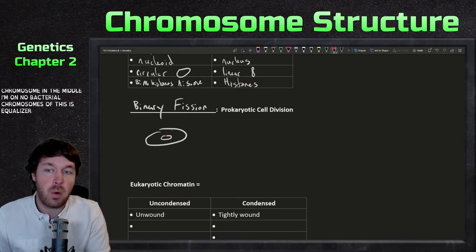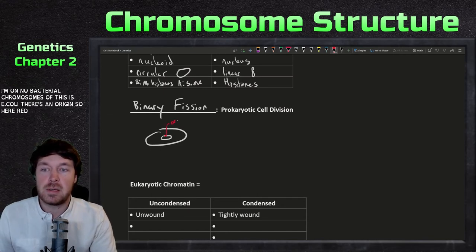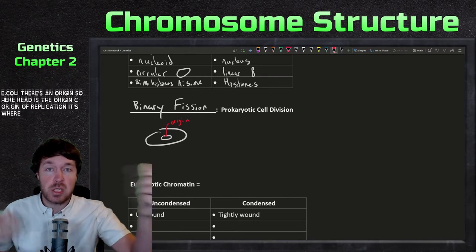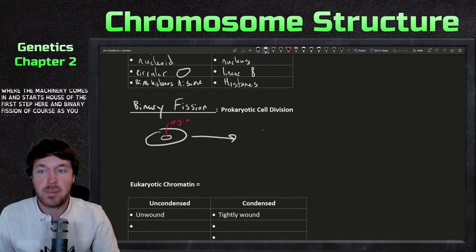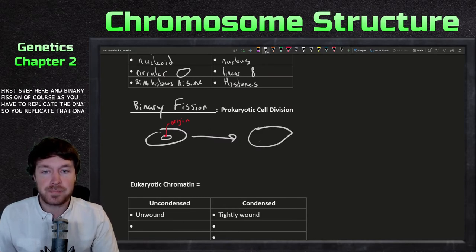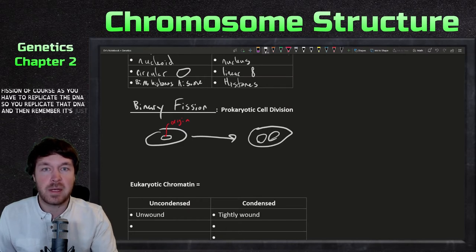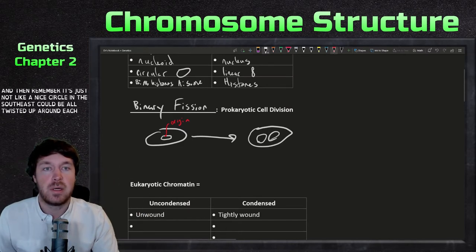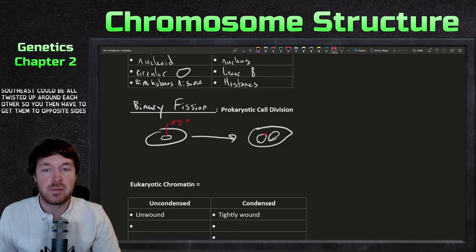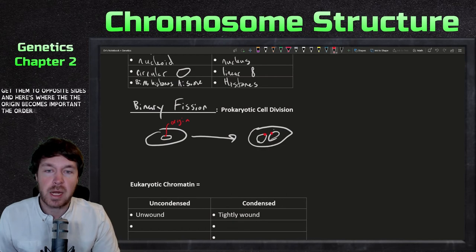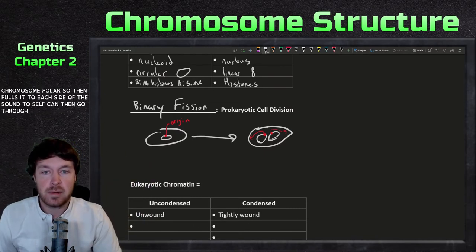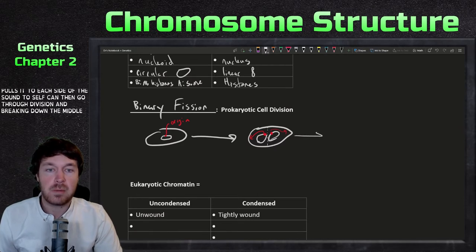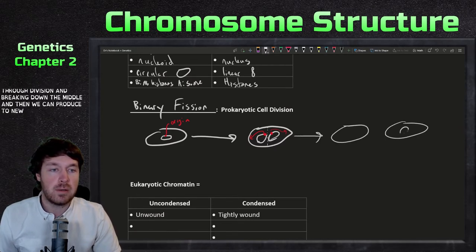If this is E. coli, there's an origin of replication — shown in red — where the machinery comes in and starts. The first step in binary fission is DNA replication. These chromosomes can be all twisted up around each other, so you then have to get them to opposite sides. The origin helps send each circular chromosome to the poles, pulling it to each side of the cell. The cell then divides down the middle, producing two new cells each with a chromosome.